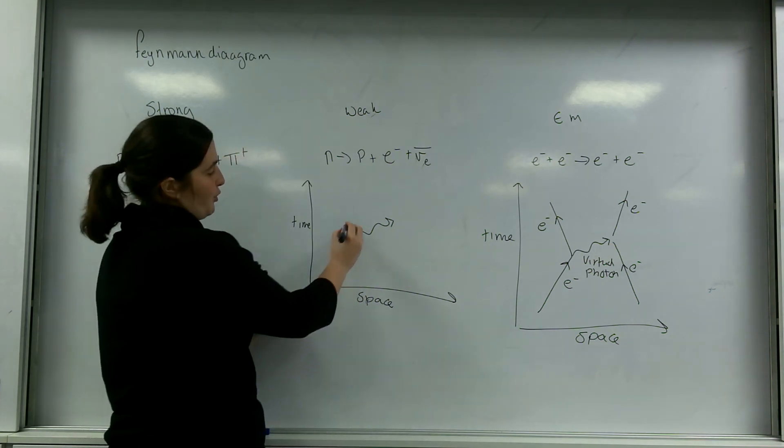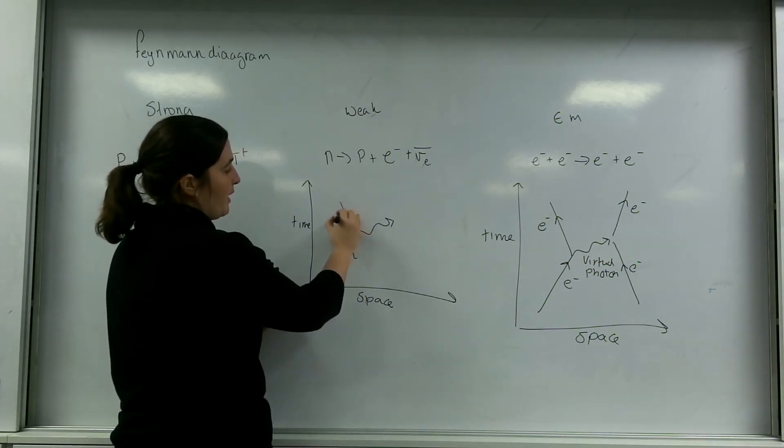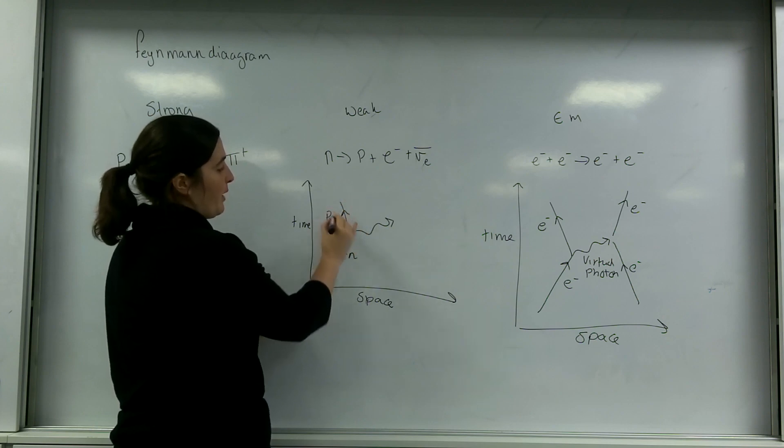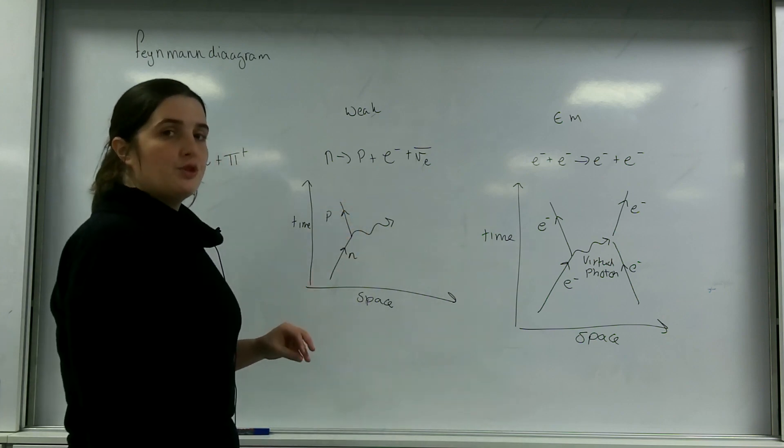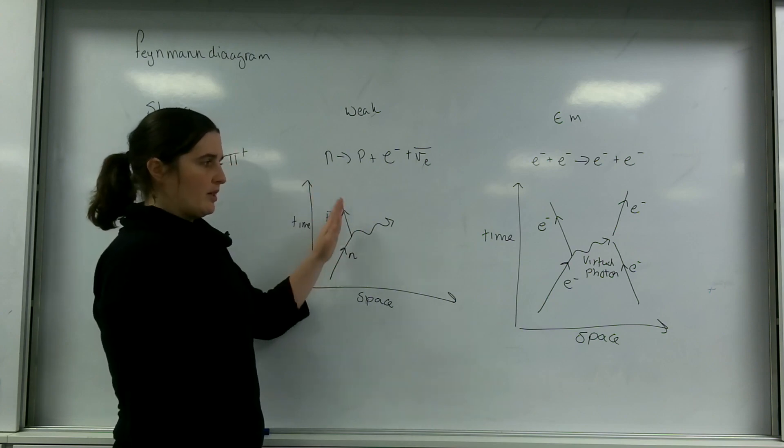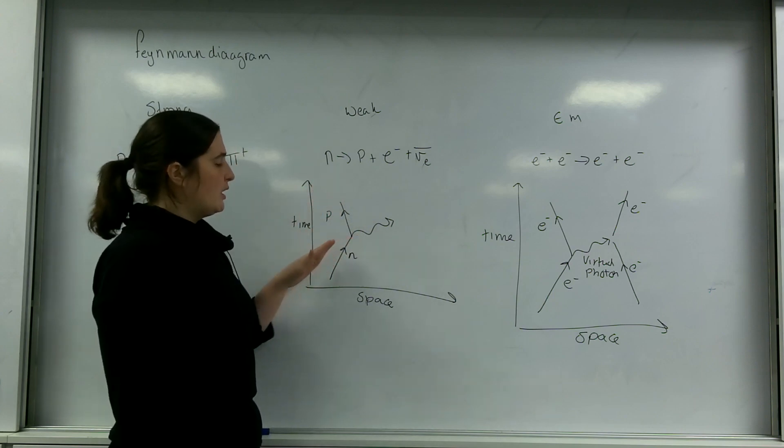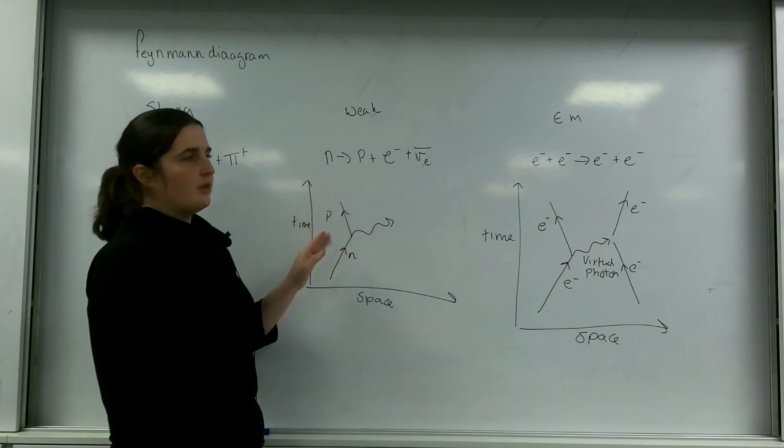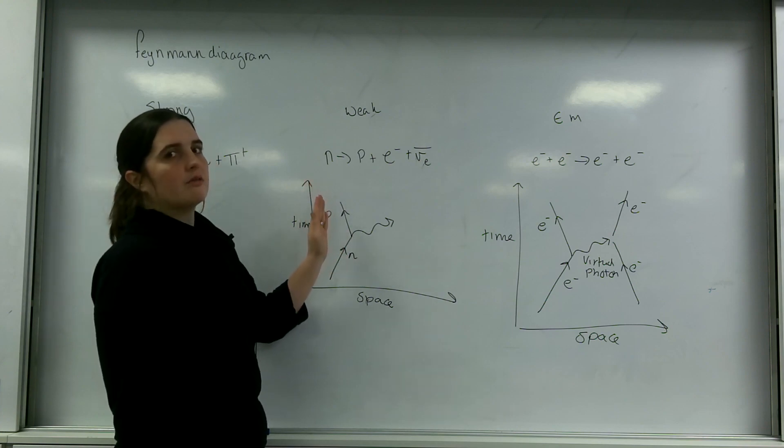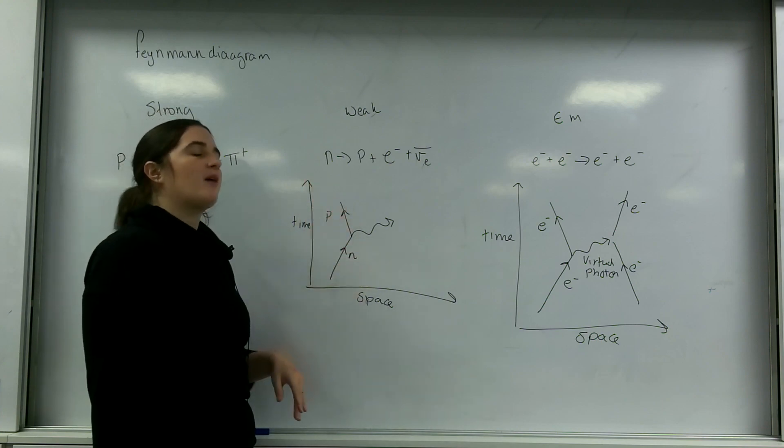After that, this neutron becomes a baryon, a proton, which is another baryon. It's important to note that this is the baryon side here - you have to have a line going from baryon to baryon. This could not turn into the electron. The neutron will turn into another baryon.